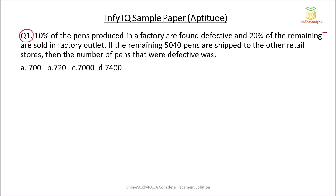Question number one is from the topic percentage. 10% of the pens produced in a factory are found defective, and 20% of the remaining are sold in the factory outlet. So friends, whatever data has been given in the question, write it first and then we will try to solve it. Suppose in the factory there were a total of 100 pens.